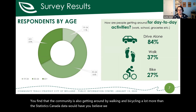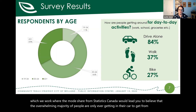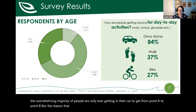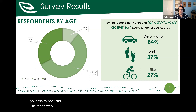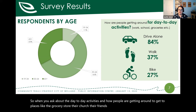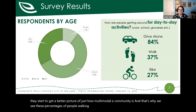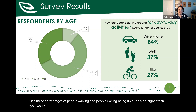We see this in many communities — Statistics Canada mode share data would suggest most people only get in their car, but that data only asks about the trip to work, which represents about one in every five trips the average person takes. When you ask about all day-to-day activities — the grocery store, church, a friend's house — you get a better picture of just how multimodal a community is, which is why percentages of walking and cycling are higher than the Statistics Canada data would suggest.